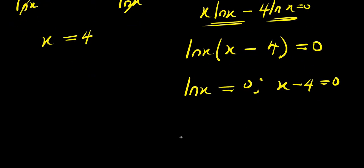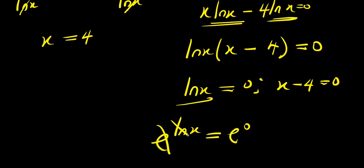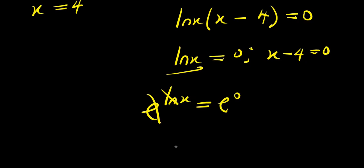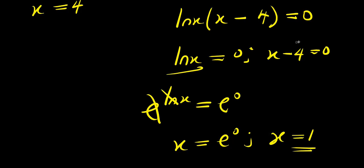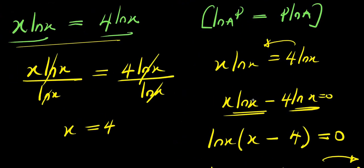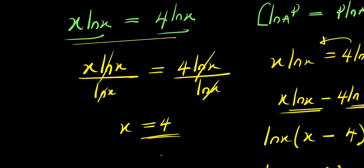From the factored form we get two equations: ln x equals 0, and x minus 4 equals 0. To solve ln x equals 0, raise e to both sides: e to the power of ln x equals e to the power of 0, so x equals 1. For x minus 4 equals 0, we get x equals 4. So we have gotten two values using this approach, compared to the first method which gave only x equals 4.